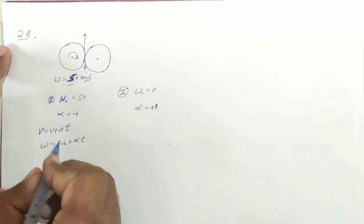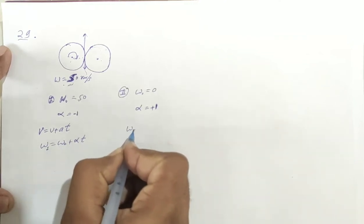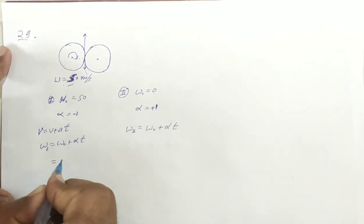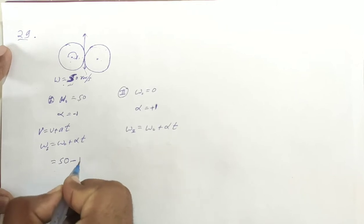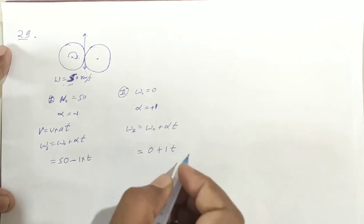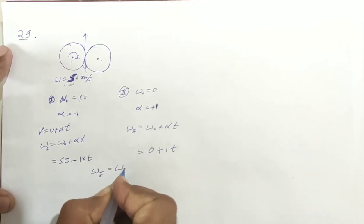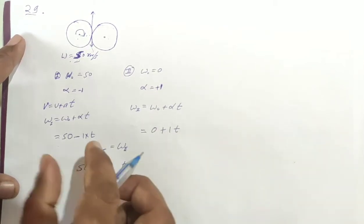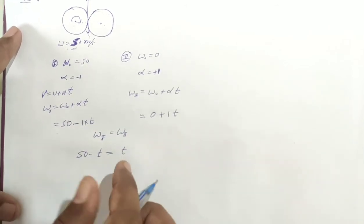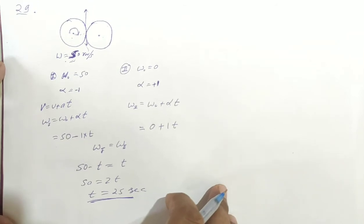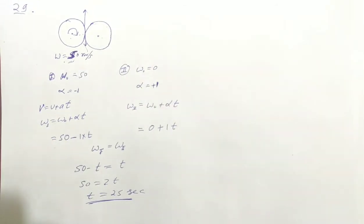So here we will take this first and this second. Omega naught plus alpha into T. Value put: 50 minus 1 into T, and 0 plus 1 into T. The angular speeds are the same, so first equals second. 50 minus T equals T. 50 equals 2T, then T equals 25 seconds. If you have any question on video solutions then subscribe to the channel and comment box with chapter number.